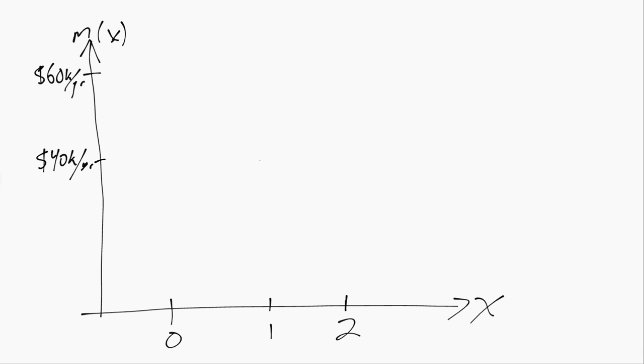This is a simple example of a conditional mean function that is not linear. In other words, if we were to assume that the true CMF is linear, we would be wrong. So we would say the linear CMF is misspecified in this case.